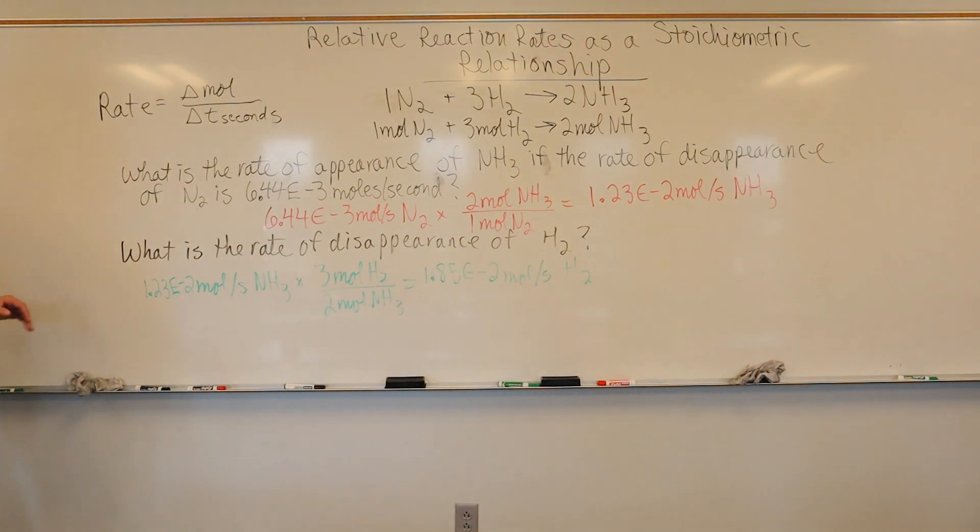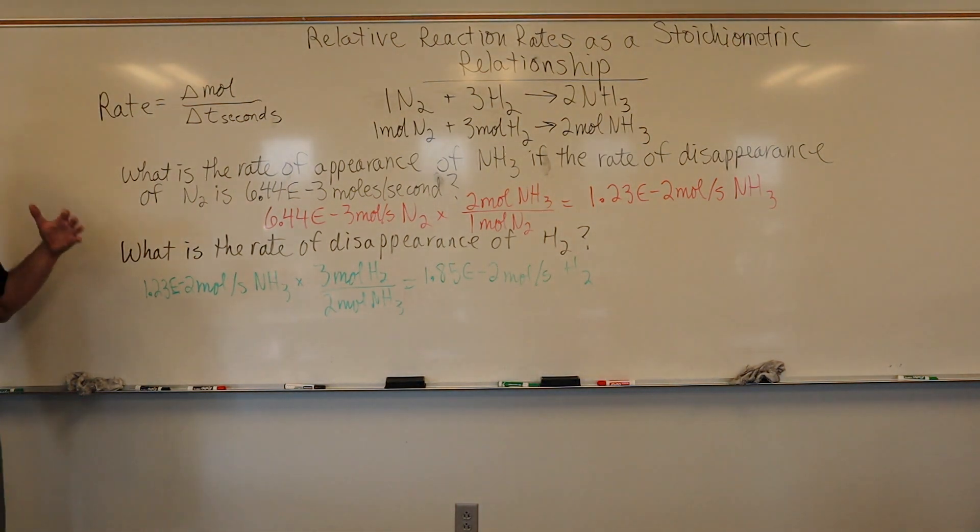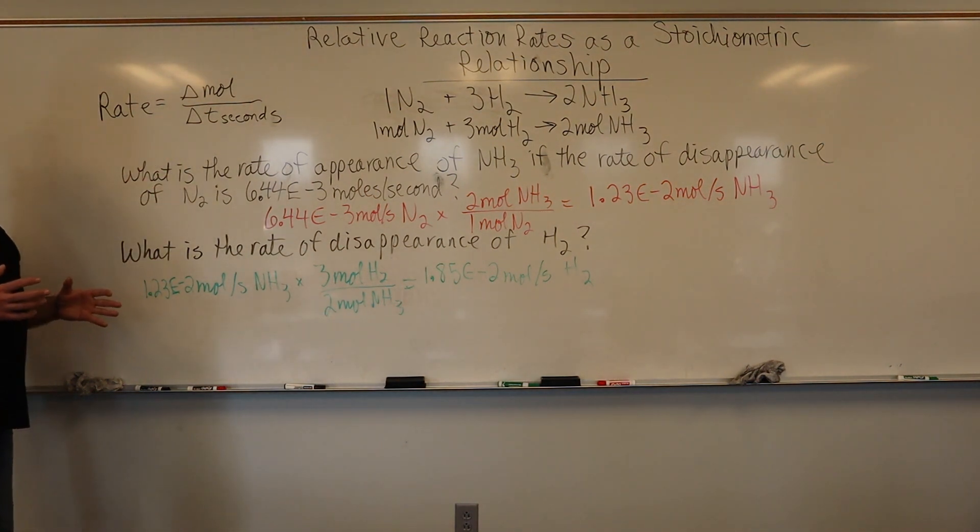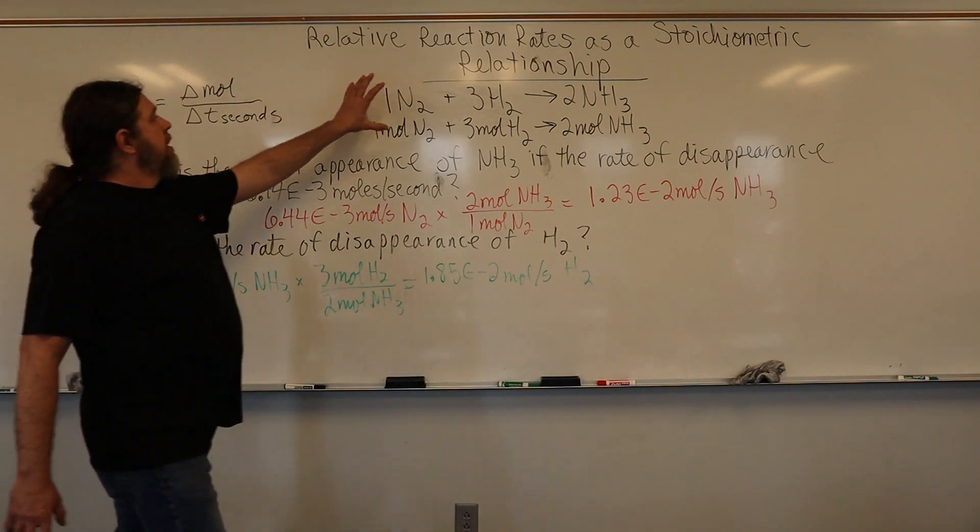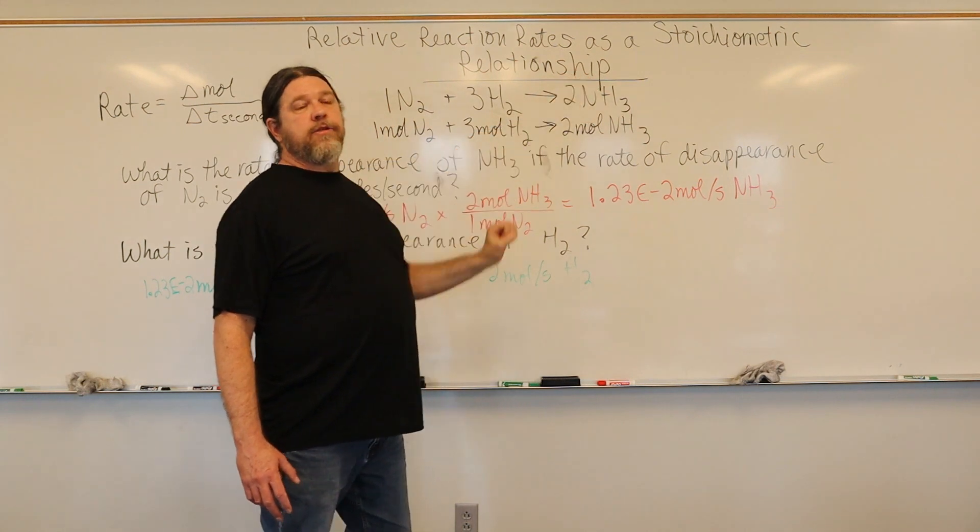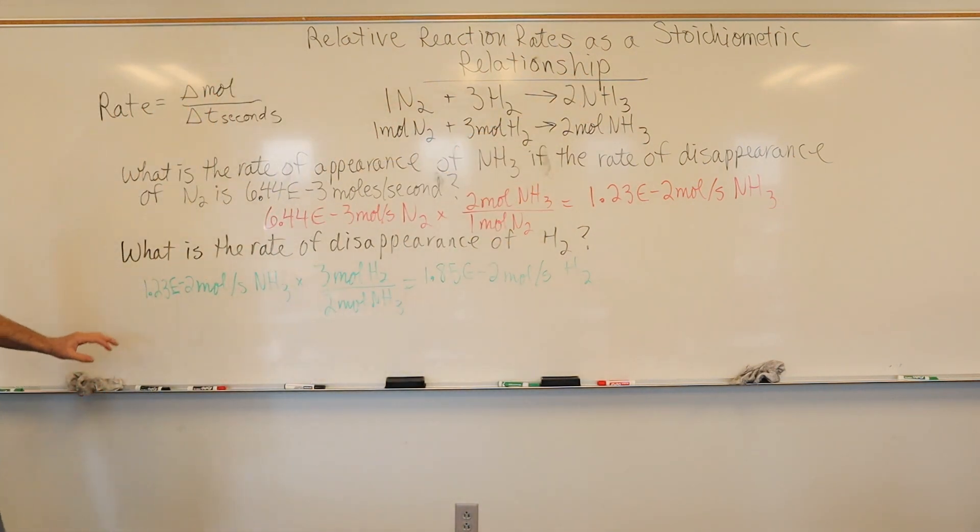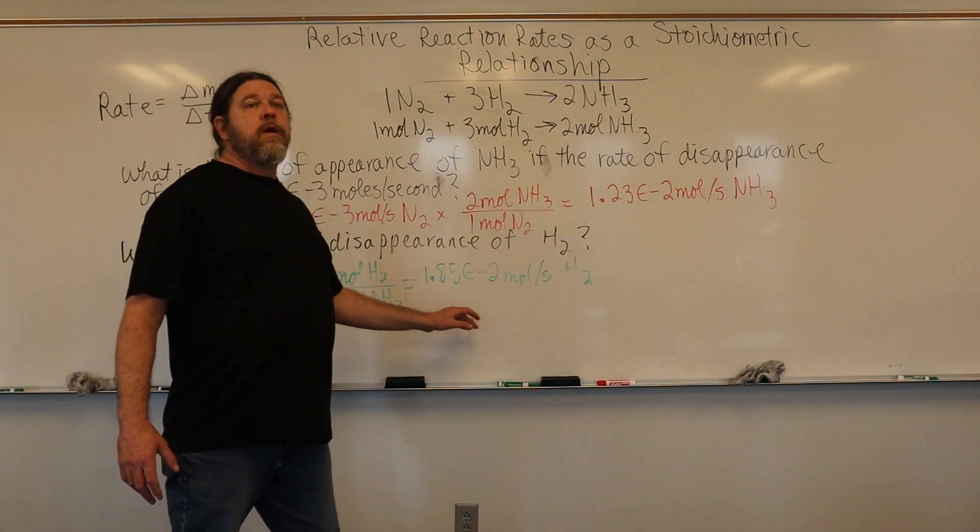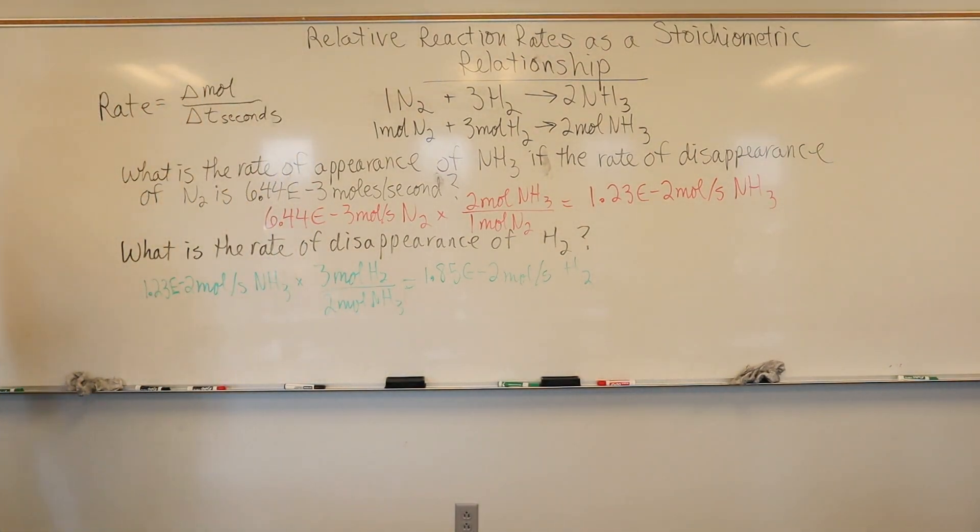it shouldn't matter which known we use because we're looking at this reaction from different angles, but it's still the same reaction. So the effects are relative to each other - as these reactants disappear at certain molar levels, this product appears at a certain molar level. I just took ammonia as our known, did our unknown over known, and here is our rate of disappearance of hydrogen.